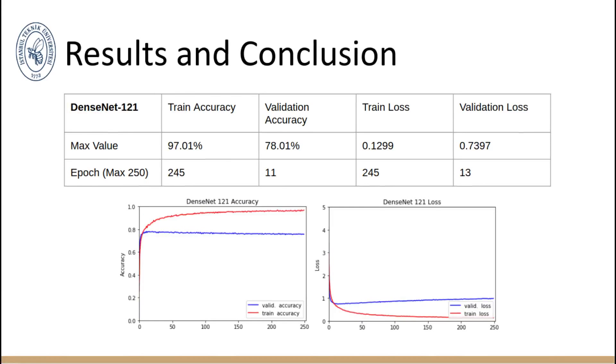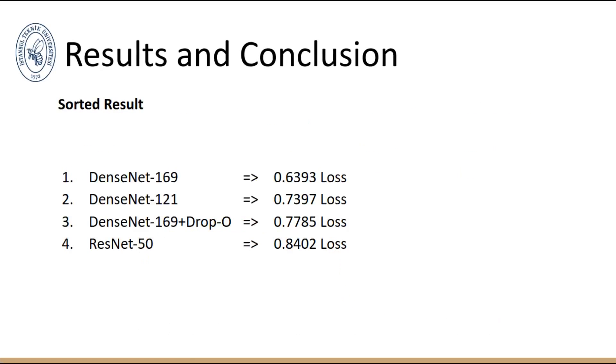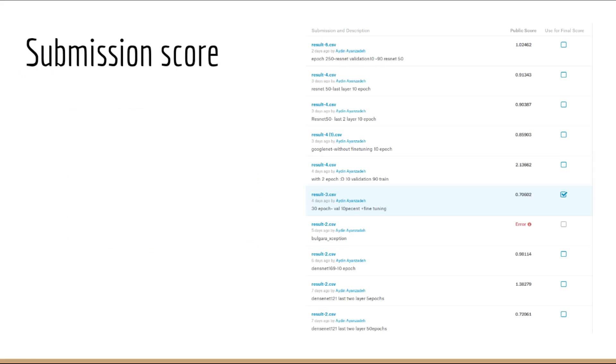Here you can see a summary of our results, and DensNet-169 is our winner of these models with 0.6393 loss. Thank you for listening.